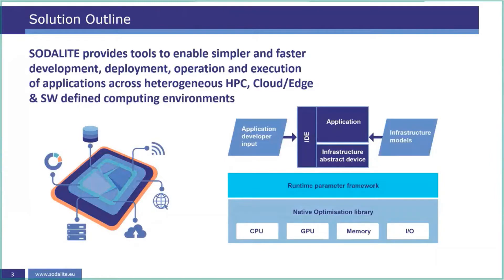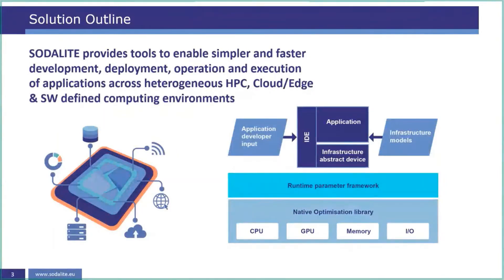The next layer is the runtime parameter framework, which looks at runtime optimizations and other things that can be done to the system. Within the IDE there is assistance in defining application logic through semantic ontologies, making it easier for developers to move forward. There's also a native optimization library providing static optimization points for different resource types. However, the real value of Satellite is that many of these are not just statically defined — they are also rolled out during runtime.